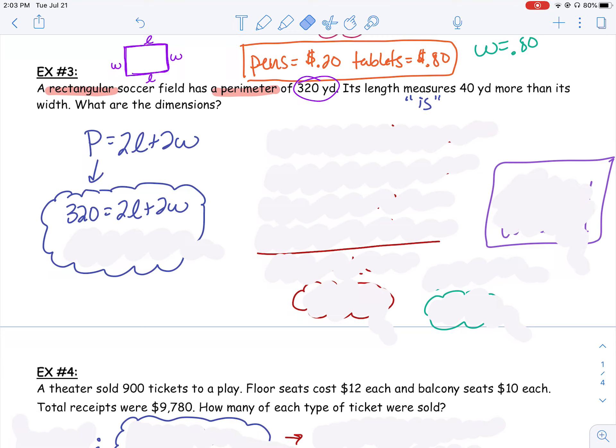So is there a second idea that it talks about in this problem that has to deal with length and width? Well, if you look at the second sentence, it says its length measures, or can I say is, 40 yards more than its width? And as soon as I see that word or interpret that word is, I can use the equal to sign, right?